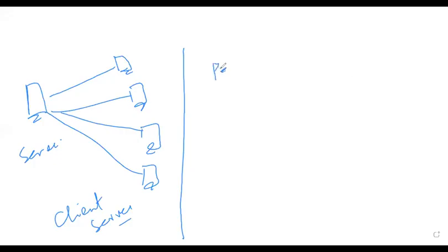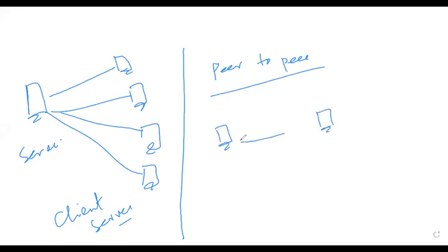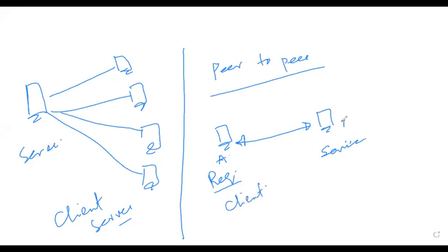Another type of architecture is a peer-to-peer network in which both computers or nodes have the same rights. It only depends on who is requesting and who is providing the service. For example, if node A is requesting, it will automatically become the client and node B will become the server.